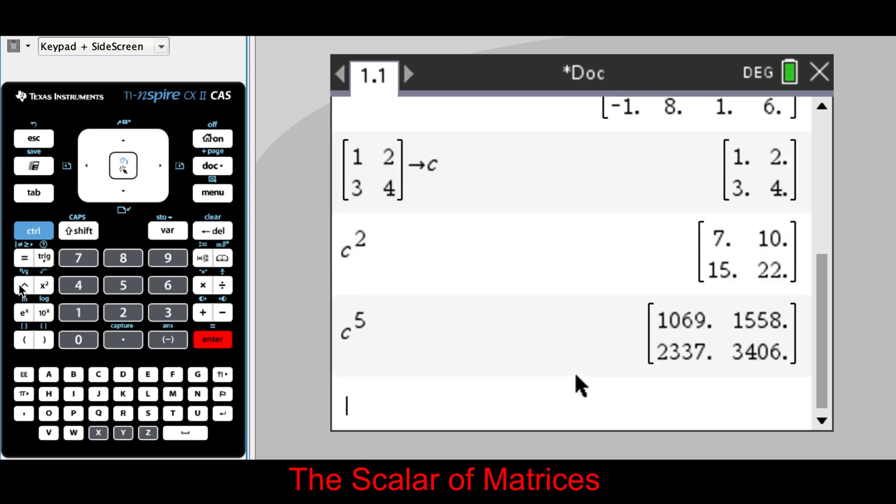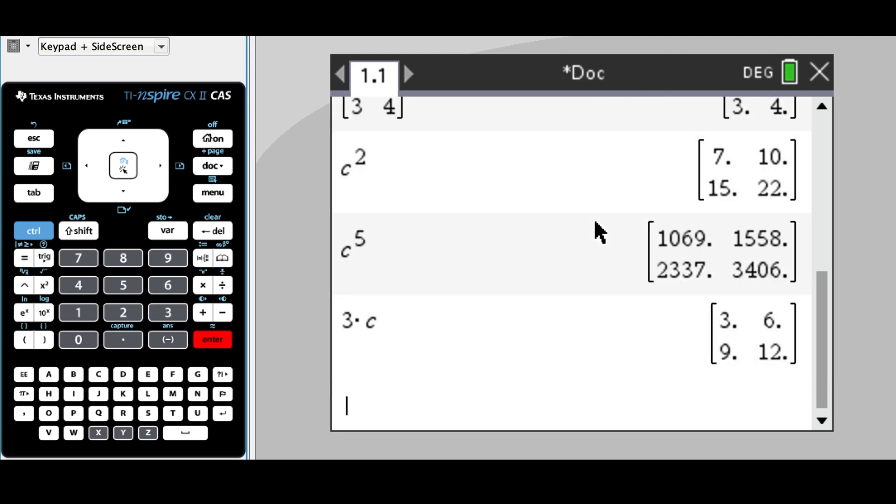I can also work out the scalar of matrices. If I want to work out three times matrix c, for example, I can simply do 3 × c and it'll work out the scalar or a scale matrix as well.